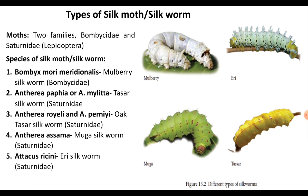Muga silk is a golden-yellow coloured silk and is the privilege of India and the pride of Assam. It is obtained from the semi-domesticated multivoltine silkworm Antheraea assamensis, which feeds on the aromatic leaves of Somu and Soalu plants and is reared on trees similar to Tassar. Muga culture is specific to Assam and is an integral part of the tradition and culture of the state, used in products like sarees and chaddars.